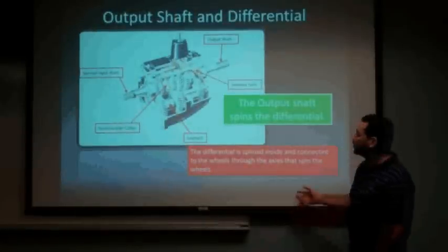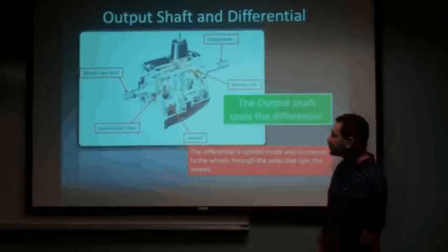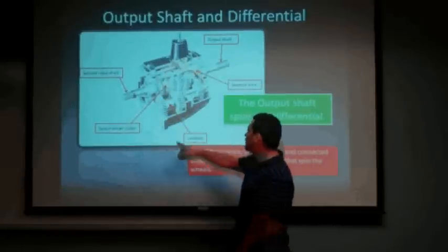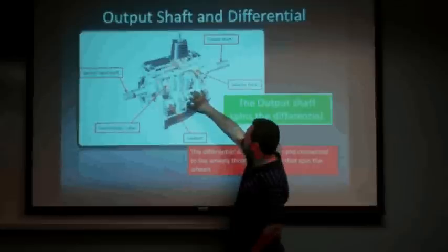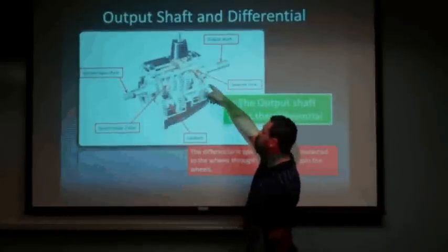Right here, we see a complete picture of a transmission. We can see the input shaft, synchronizer collar, the lathe shaft here, the output shaft, and the selective port.